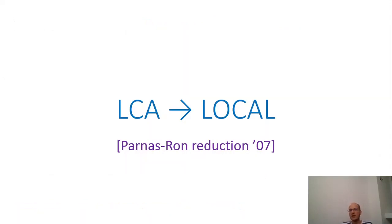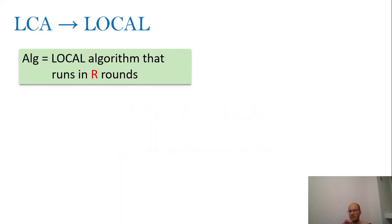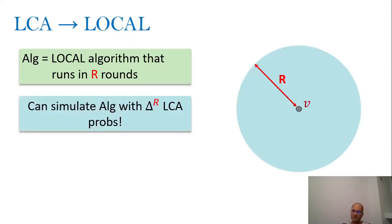We are now moving to the first technique, introduced by Parnas and Ron in 2007. Let ALG be a local algorithm — local in terms of distributed computation, where every two incident vertices can exchange arbitrary-size messages in one round of computation. Let ALG be one such local algorithm that runs in R rounds. The idea is that we can simulate this algorithm with Δ^R many LCA probes.